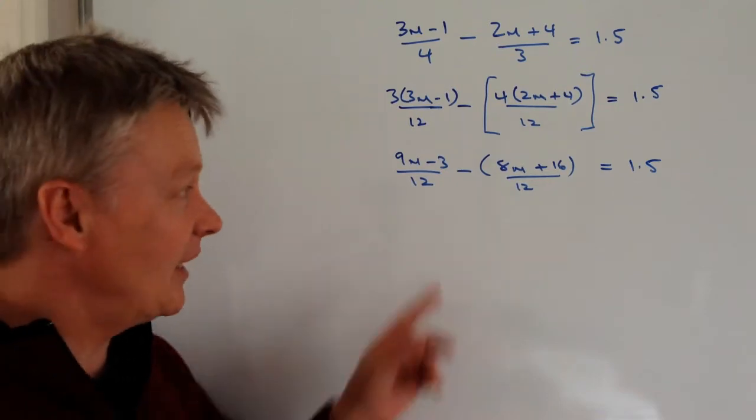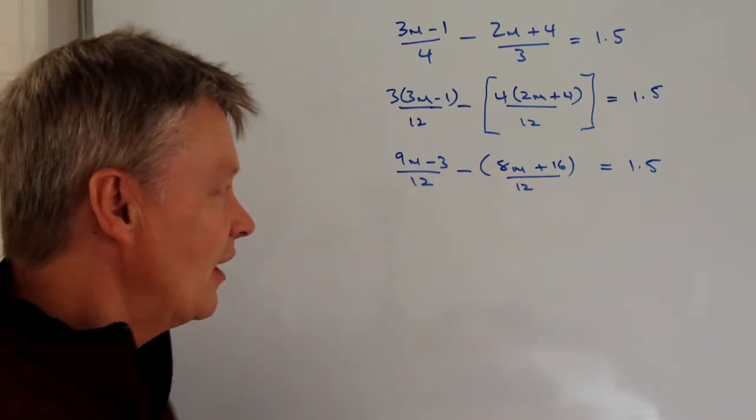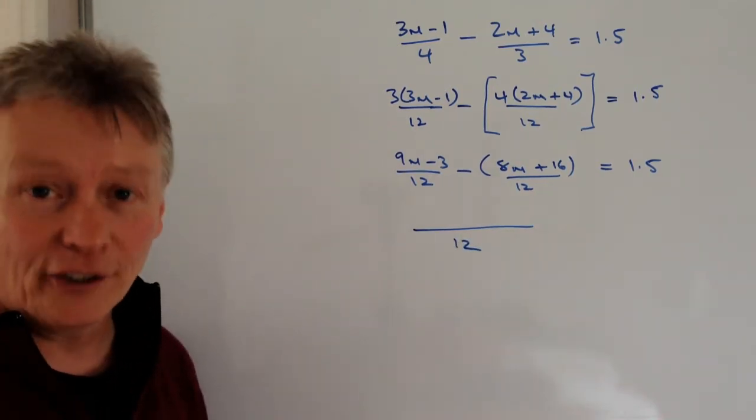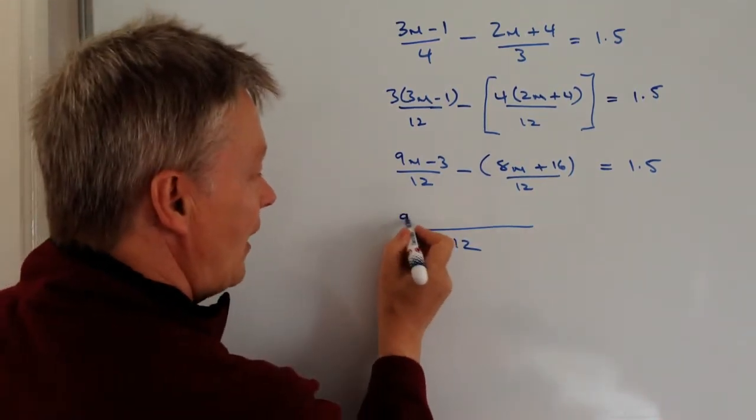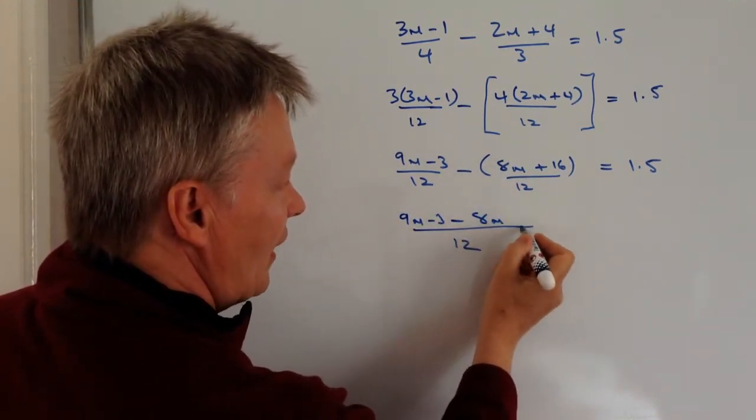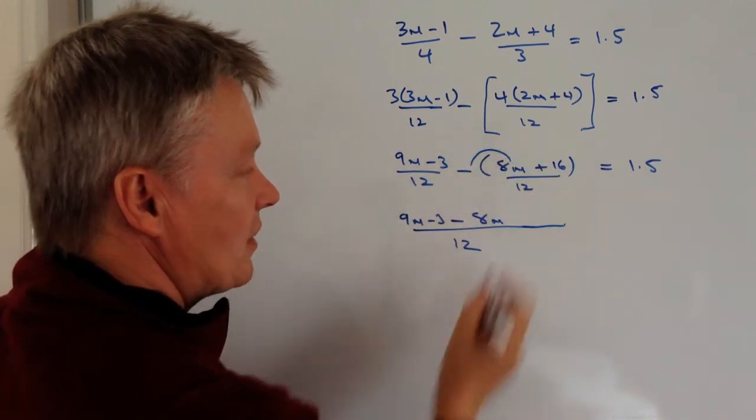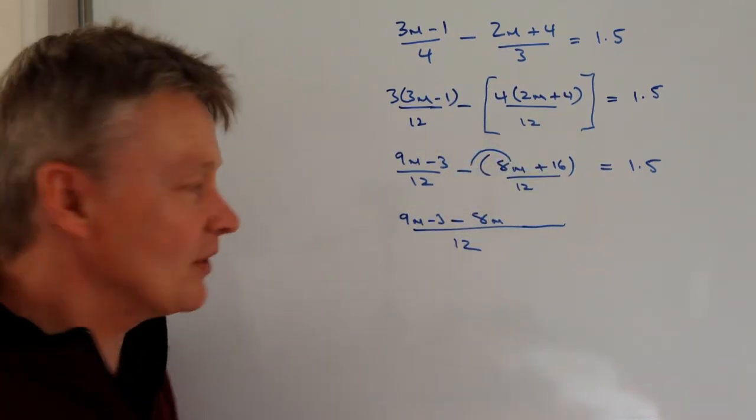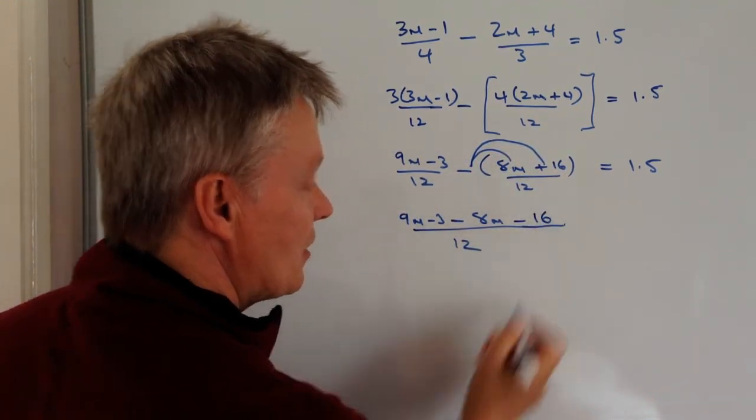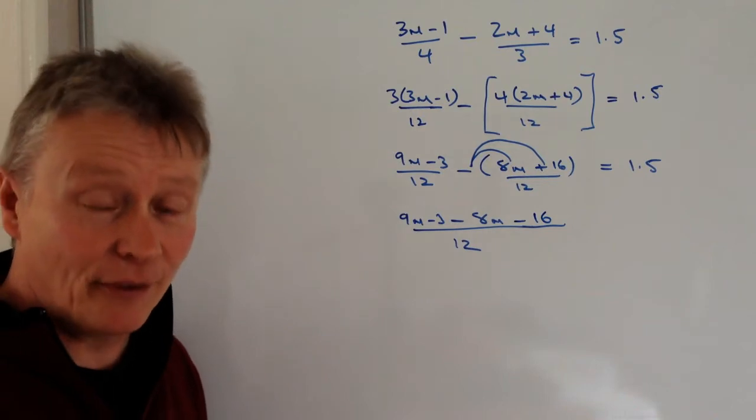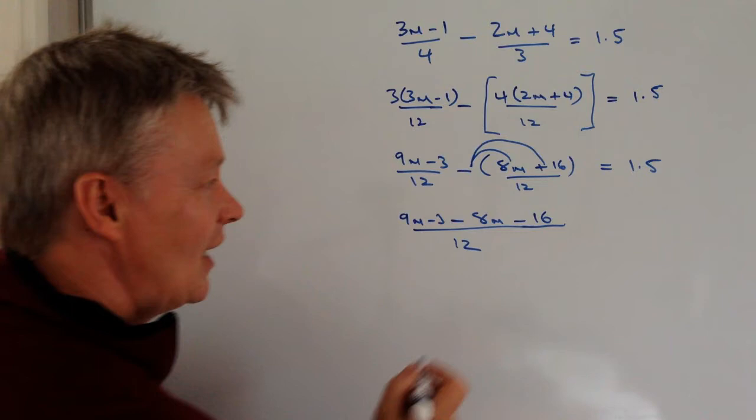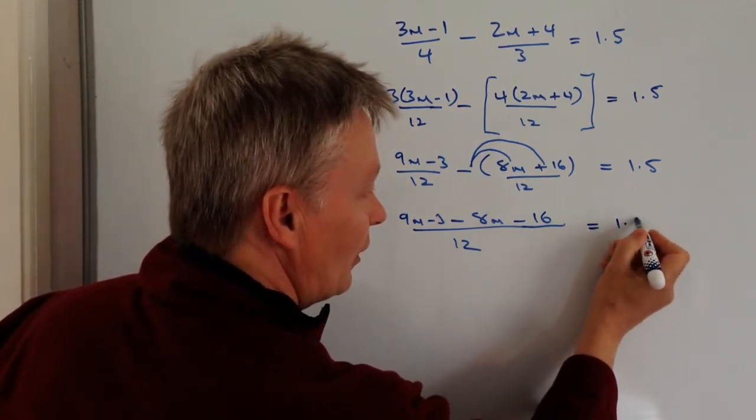So now it comes to the point where I need to get rid of these brackets, so I'm going to rewrite this now as a common denominator of 12, and the first bit is I've got 9m minus 3 minus 8m, but then I've got minus times a positive, so minus a positive is a minus, and it's going to be minus 16. Be really careful about that, because that's the one thing that kind of trips everybody up with these sorts of equations, and that equals 1.5.